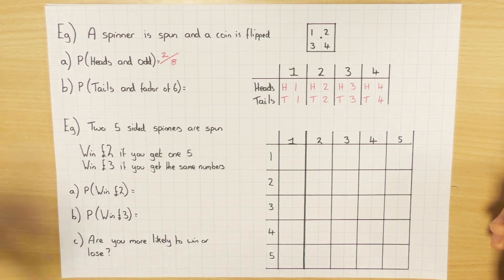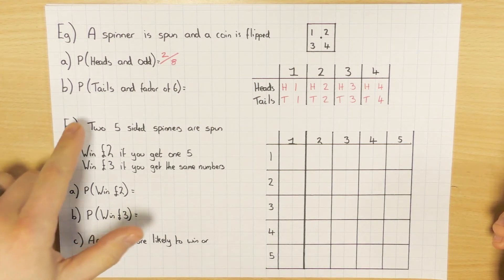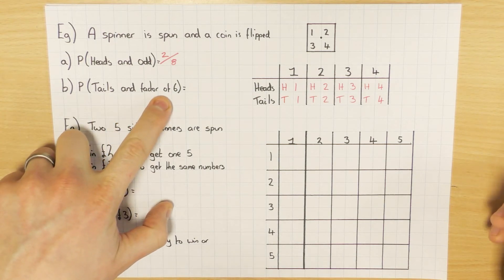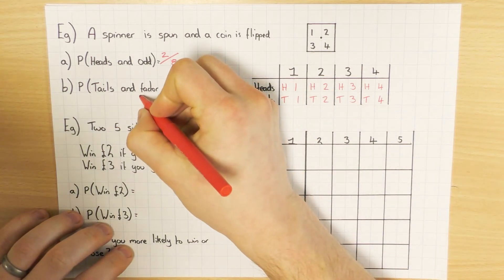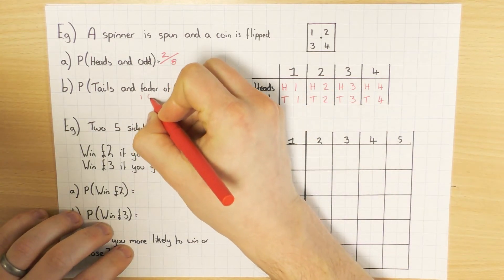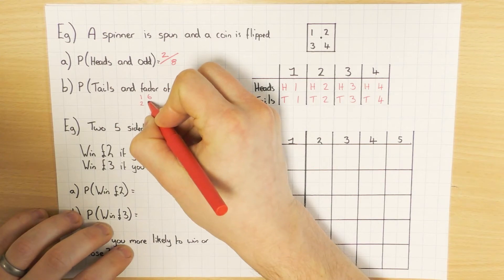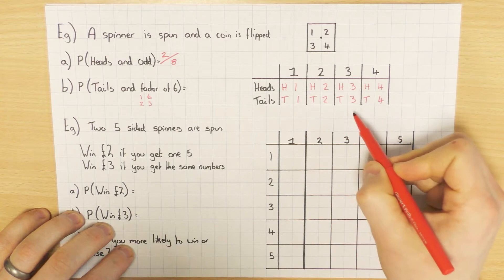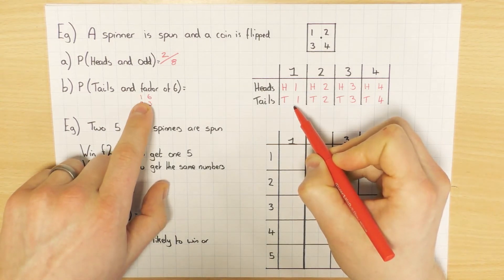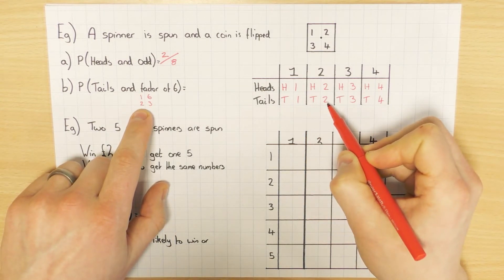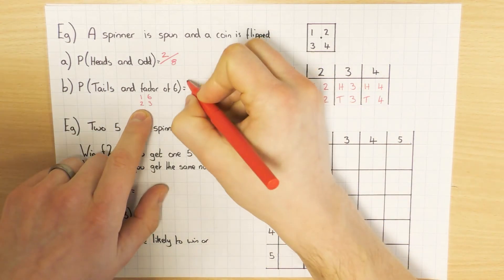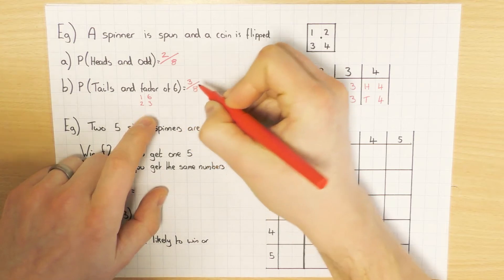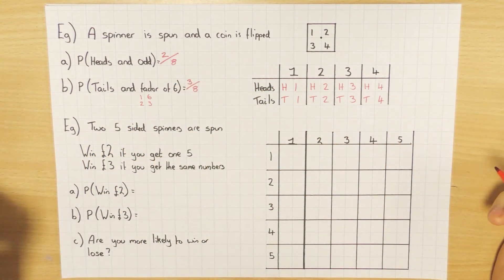Part b: what's the probability of tails and a factor of six? Work out the factors of six first: one times six, and two times three, so the factors are 1, 2, 3, and 6. Looking at the tails outcomes: T1 - one is a factor, T2 - two is a factor, T3 - three is a factor. That's three outcomes out of the total of eight.